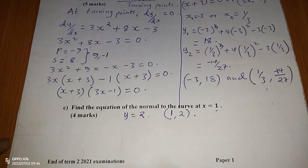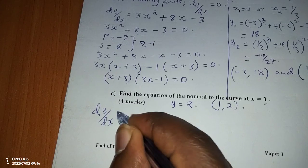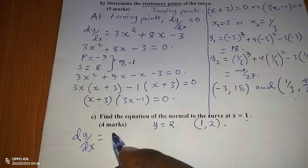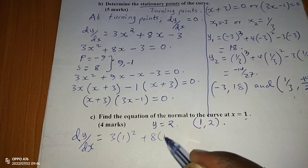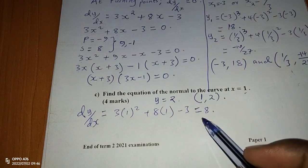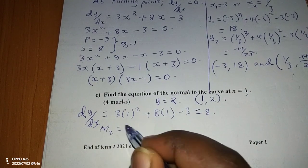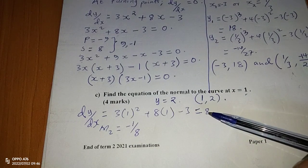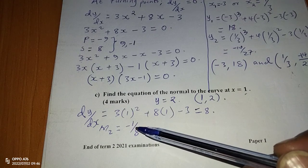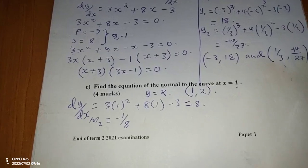We find the gradient of the curve at x equals 1 by substituting into dy/dx equals 3x squared plus 8x minus 3, which gives 8. This is the gradient of the tangent. The gradient of the normal is negative 1 over 8, since the tangent and normal are perpendicular and their gradients multiply to give negative 1.